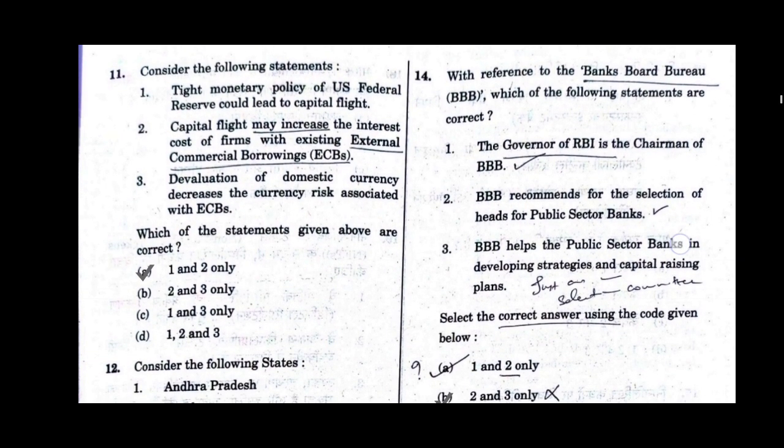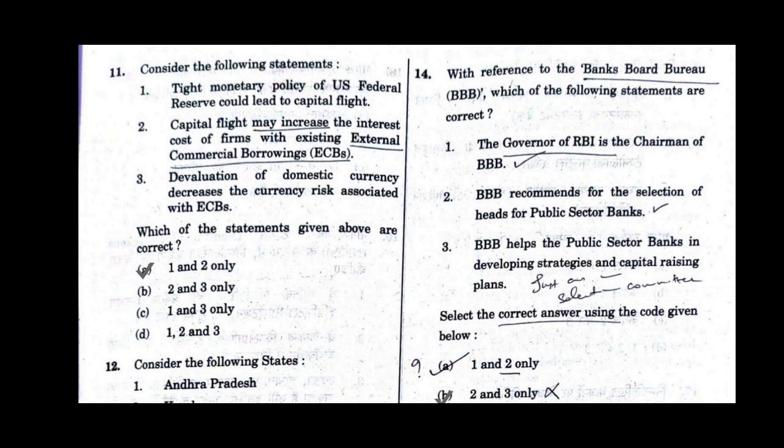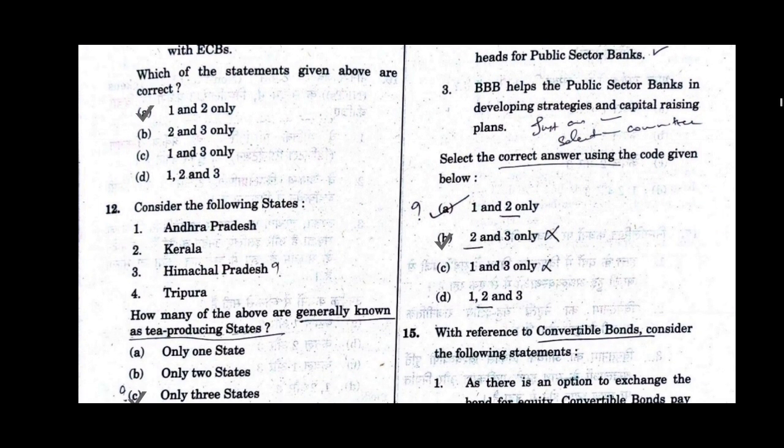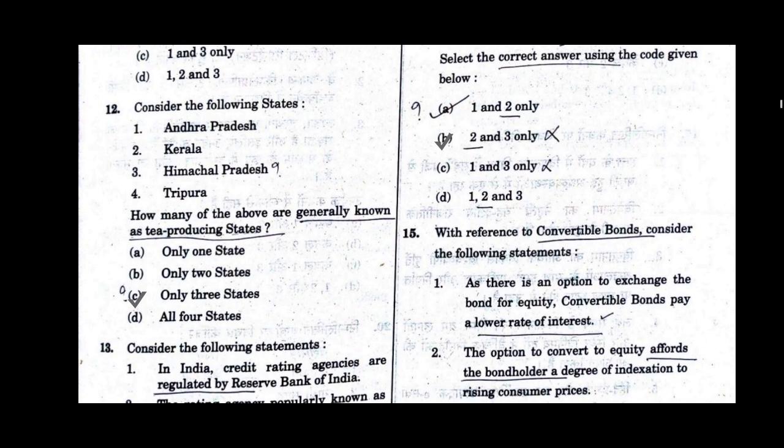Question number 11. Consider the following statements. Which of the statements given above are correct? Option A will be the correct answer: 1 and 2 only. Question number 12. Consider the following statements — Andhra Pradesh, Kerala, Himachal Pradesh, Tripura. How many of the above are generally known as tea-producing states? Option C will be the correct answer: only three states.